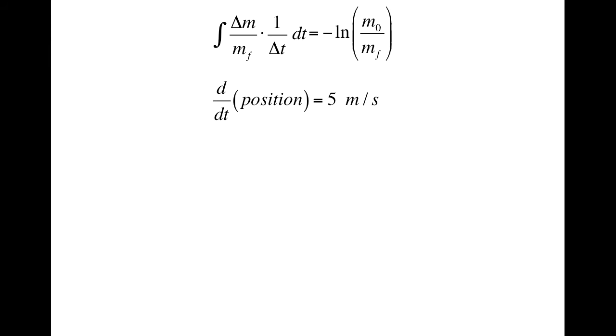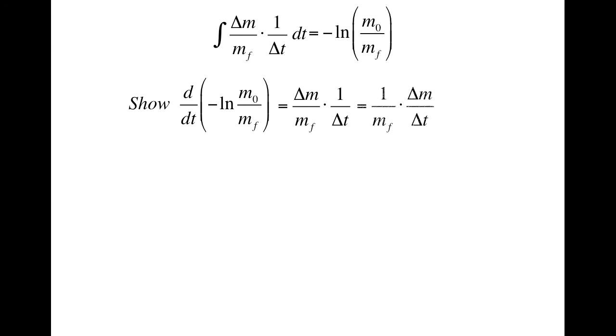In saying that an integral is an anti-derivative, I mean that the derivative of the result of an integration will get what was initially inside the integral. That is, I need to show that the derivative with respect to time of negative log of m0 over mf will get what was originally inside the integral, namely delta m over mf times 1 over delta t. Rearrange slightly, 1 over mf times delta m over delta t. To take derivatives, we need some rules.